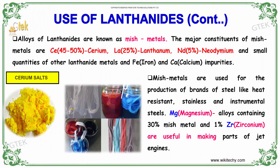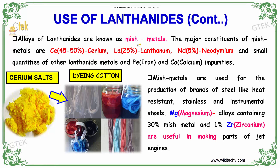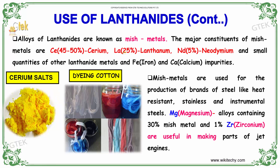Alloys of lanthanides are known as Misch metals. The major constituents of Misch metals are cerium 45 to 75%, lanthanum 25%, and neodymium 5%, along with small quantities of other lanthanide metals and iron and calcium impurities.